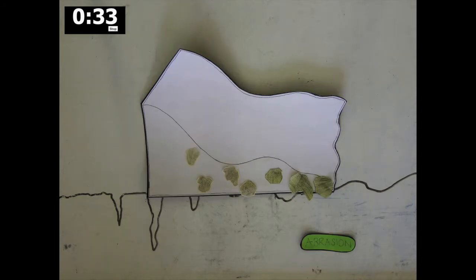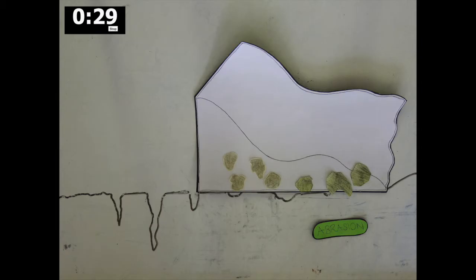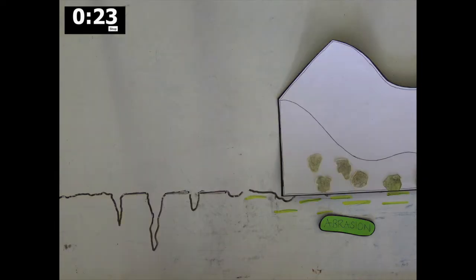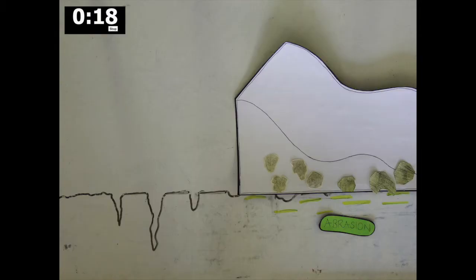As more rocks and debris are embedded into the ice, the base and sides of a glacier become rougher. As the glacier flows, it drags this material across the landscape and acts like sandpaper, wearing it down and leaving behind smooth, polished surfaces. This process is called abrasion.